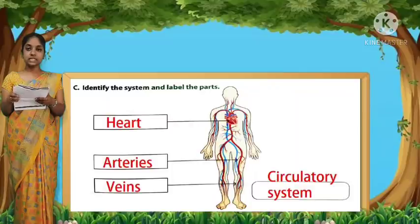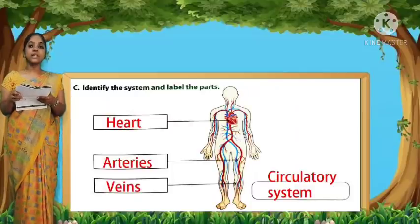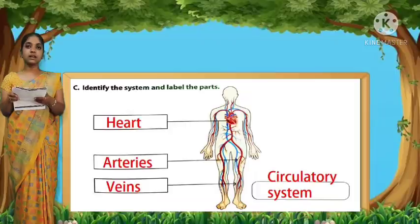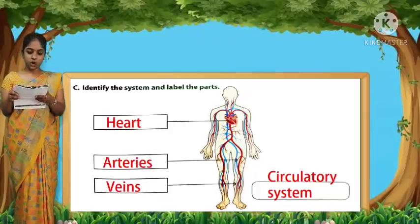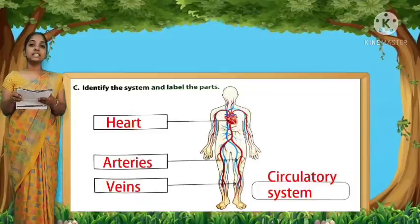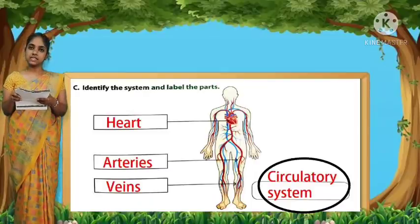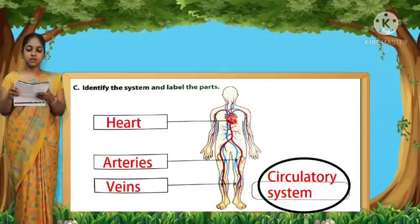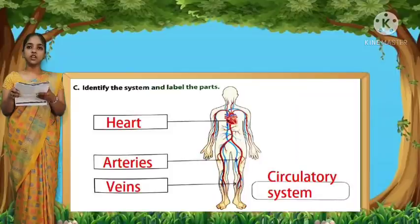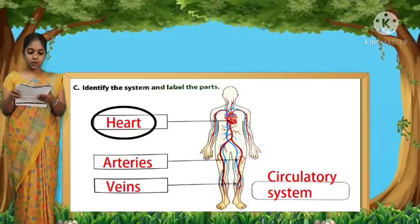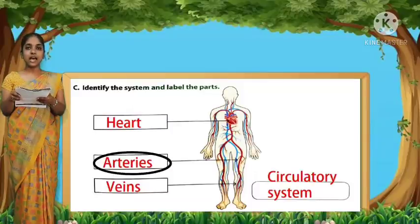Next, identify the system and label the parts. The system shown is the circulatory system. The parts to label are: the first one is the heart, the second one is the blood vessels, and the third one is the veins.